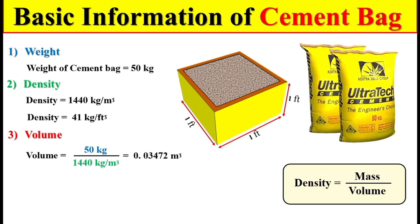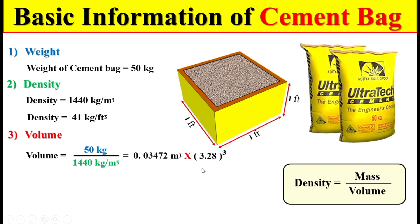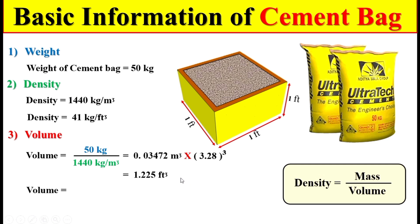If we want to calculate the total volume of one bag of cement in terms of cubic feet, remember that one meter equals 3.28 feet. So we multiply by the cube of 3.28 to convert to cubic feet. Alternatively, we use the same approach — mass divided by density — but using the density of cement in kg per cubic foot to get the volume directly in cubic feet.